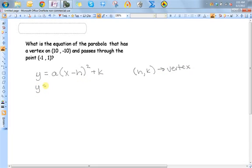So I already know the values of h and k, so let's go ahead and plug those in. So this would be h and this would be k. So y = a(x - 10)² - 10.